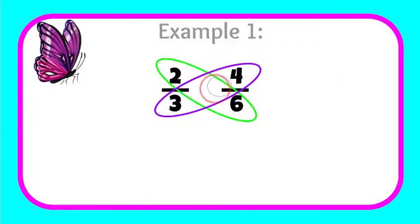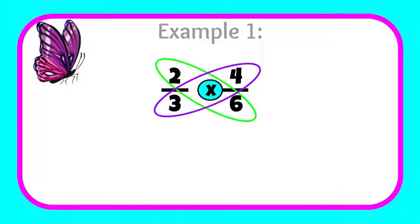Then I'm going to multiply. Two times six is 12. And four times three is also 12. So these two fractions are equivalent.